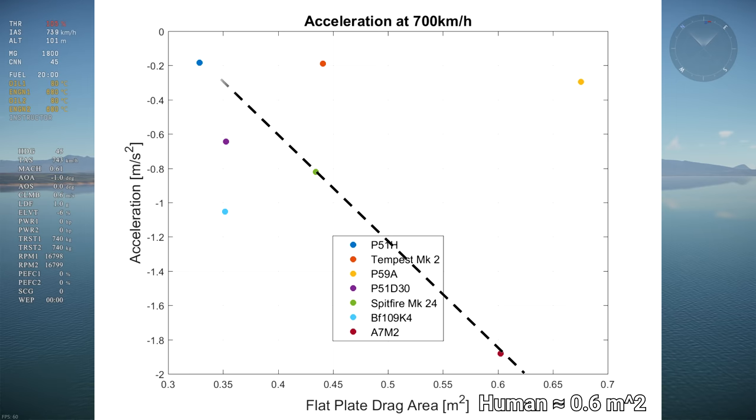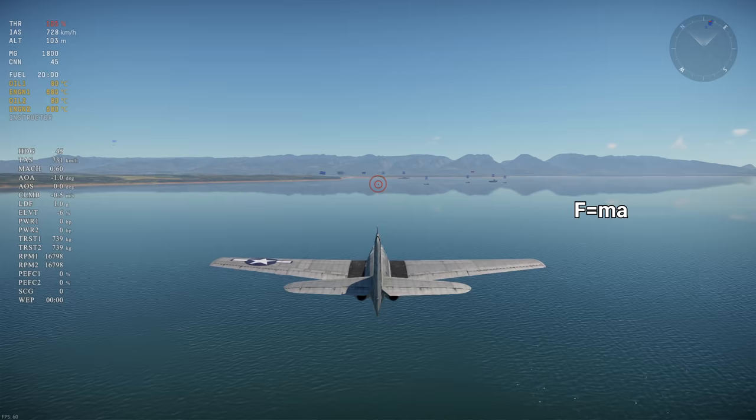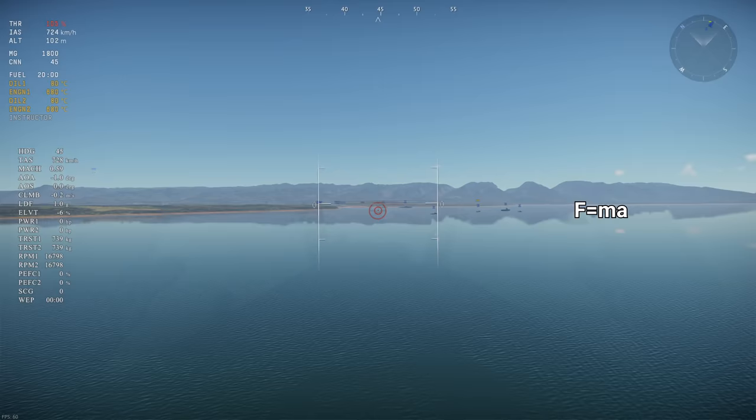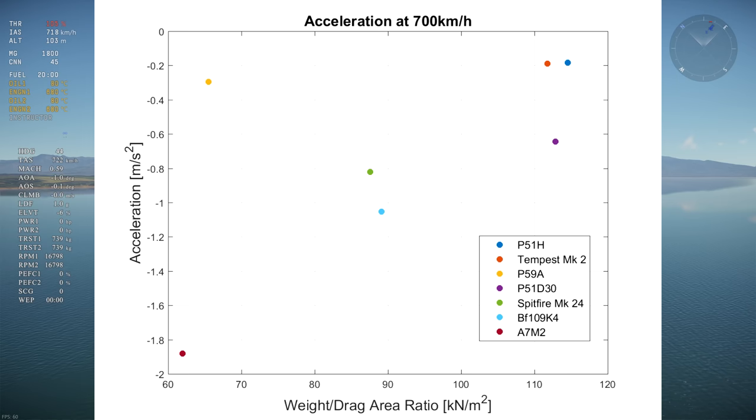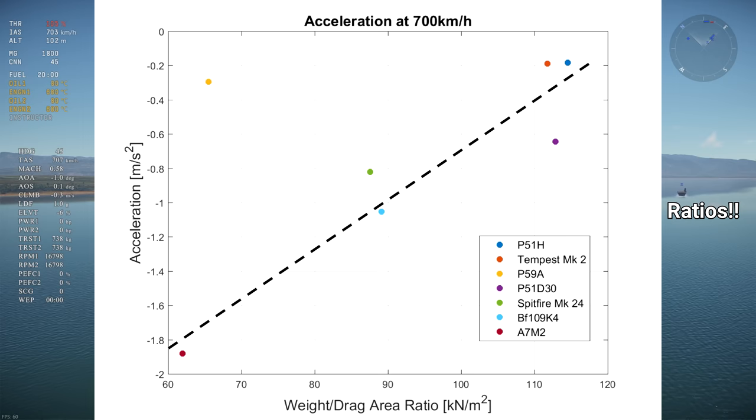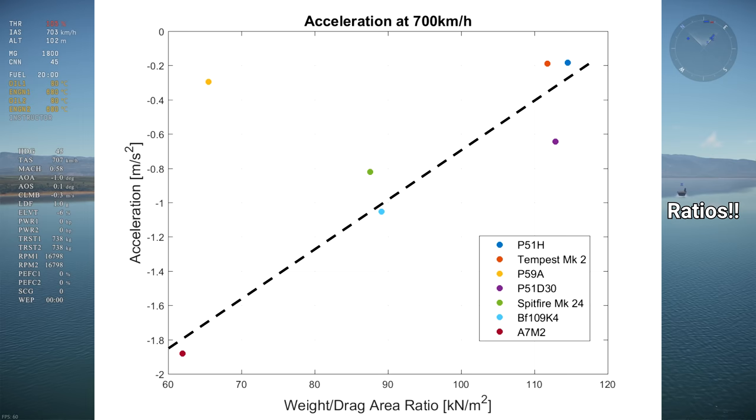However, there's a better characteristic than simply drag. Acceleration is not only proportional to drag, but also to mass or weight, following F equals M A. By making the acceleration graph as a function of the weight to drag ratio instead, we get a tighter distribution and a better correlation with acceleration. Ratios are what's important for aircraft's performance, not simply power, weight, and drag.